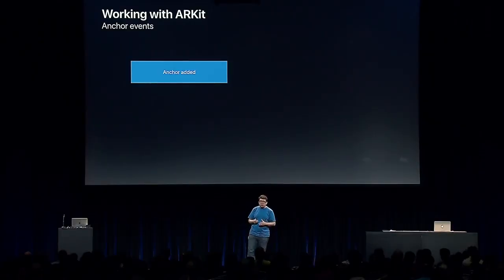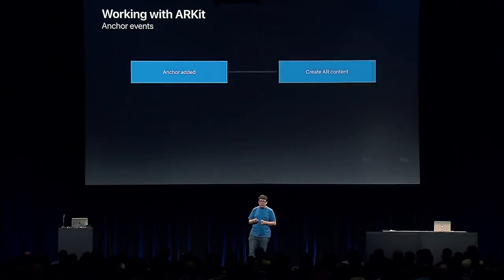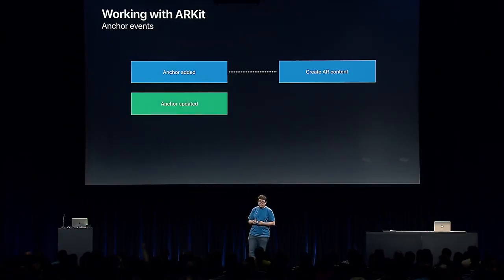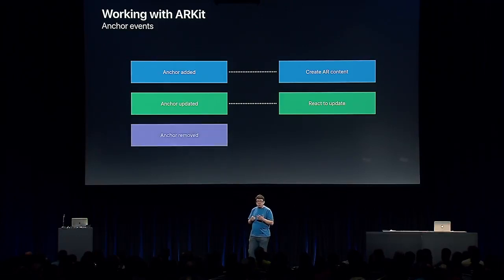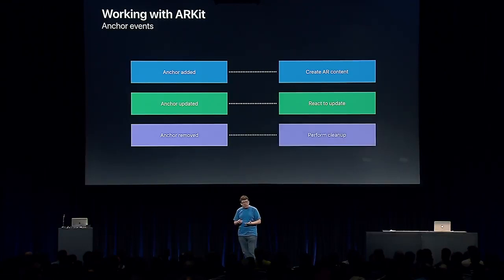Now let's talk about the ARKit events the view controller needs to react to. The first event is when a new anchor gets added to the session — ARKit will ask the view controller for the SpriteKit nodes to associate with that anchor. The second event is when an existing anchor is updated — ARKit informs the view controller so you can react. The third event is when an anchor is removed, so you can perform any necessary cleanup.